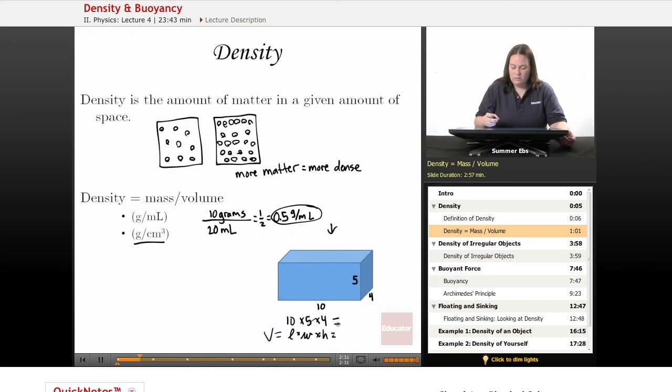That equals 200, and the label is centimeters cubed. If this was 10 centimeters, 5 centimeters, and 4 centimeters, you have centimeters times centimeters times centimeters, which gives you centimeters cubed.